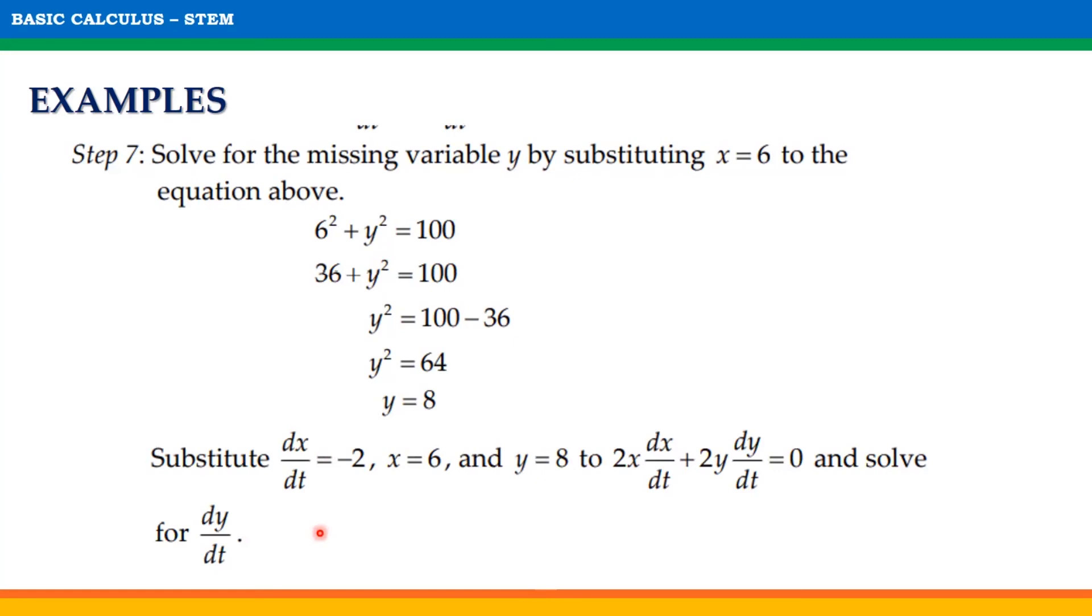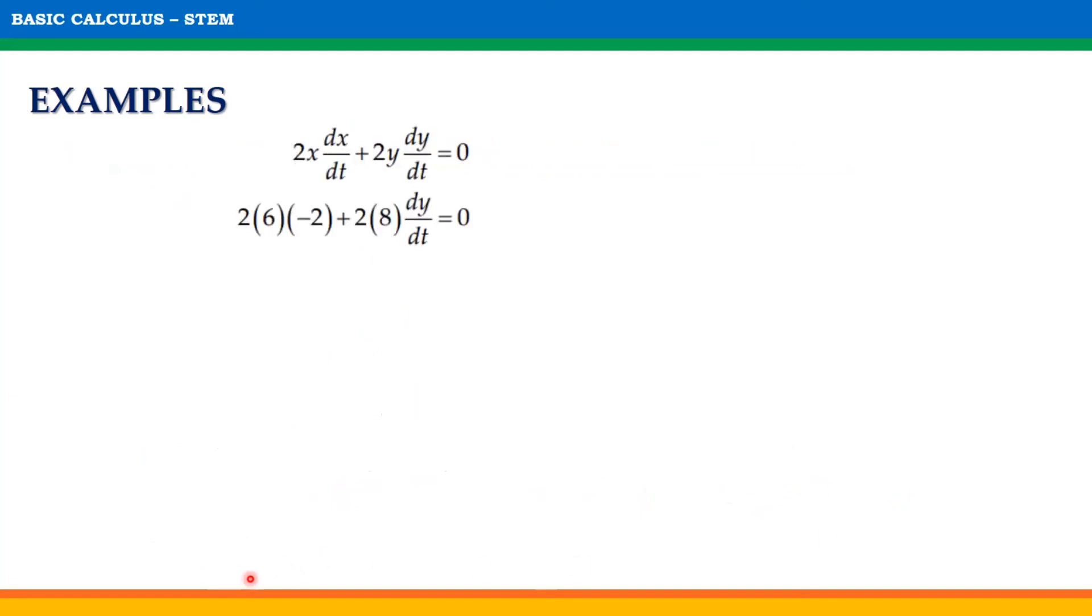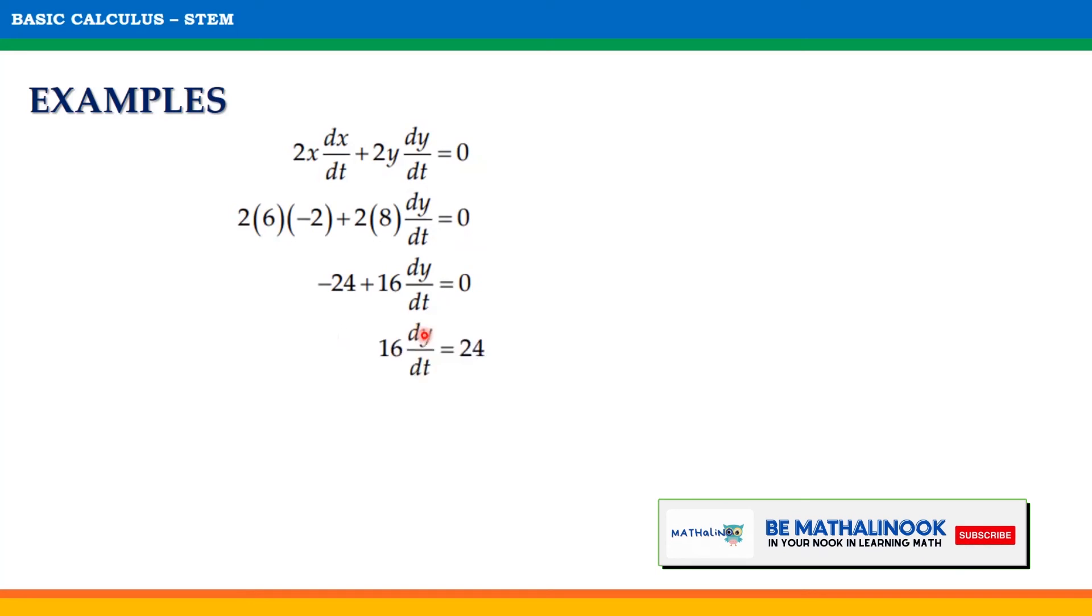Now, substitute the other given values: dx/dt = -2, x = 6, and y = 8 into 2x(dx/dt) + 2y(dy/dt) = 0, and solve for dy/dt. We get 2(6)(-2) + 2(8)(dy/dt) = 0. Simplifying, we get -24 + 16(dy/dt) = 0. Thus, 16(dy/dt) = 24. Dividing both sides by 16, we get dy/dt = 24/16 = 3/2.